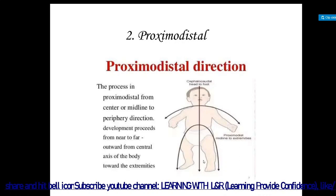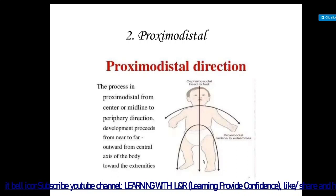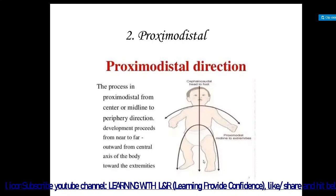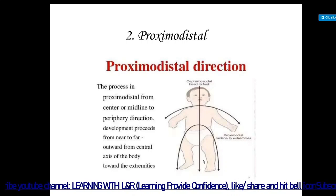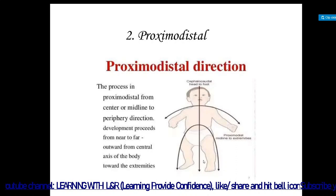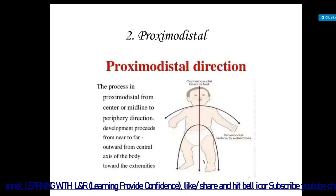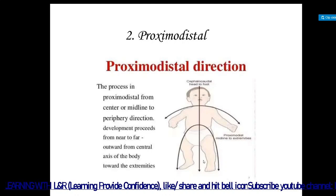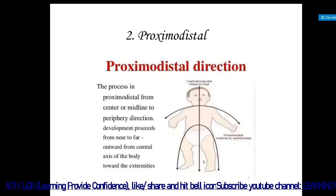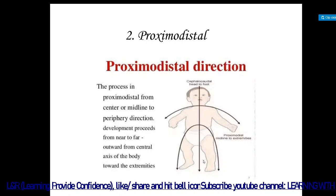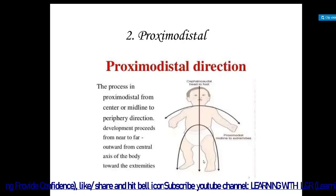The next principle is proximodistal. In cephalocaudal, growth starts from the head then other parts of the body. In proximodistal, the process goes from the center or midline to the periphery. For example, first the chest area develops, then the arm, then the hand, then the fingers — as we also see in fetal development.